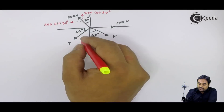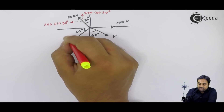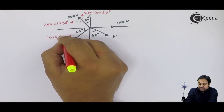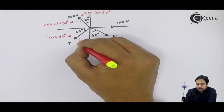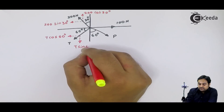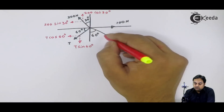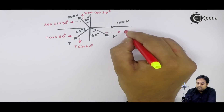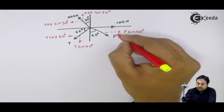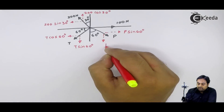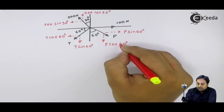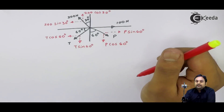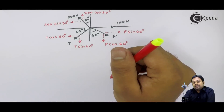Force T is inclined at 60 degree with horizontal, so its horizontal component is T cos 60 and vertical component is T sin 60. Force P is inclined at 60 degree with vertical. Having resolved all the forces into components, we can easily find T and P by applying the conditions of equilibrium.